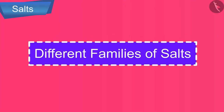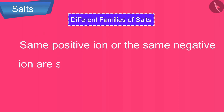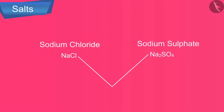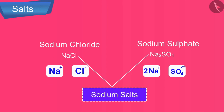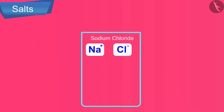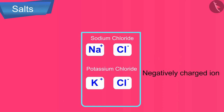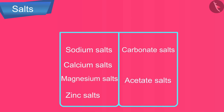The salts having the same positive ion or the same negative ion are said to belong to a family. For example, sodium chloride and sodium sulphate both belong to the sodium salts family because they both contain Na+ ions. Similarly, sodium chloride and potassium chloride belong to the same family because they share Cl- ions. Some important families of salts include sodium salts, calcium salts, magnesium salts, zinc salts, carbonate salts, and acetate salts.